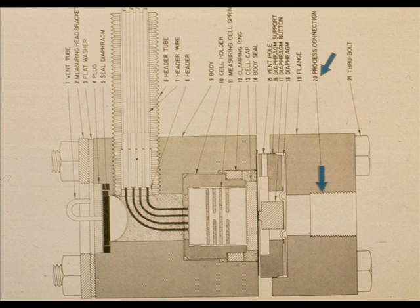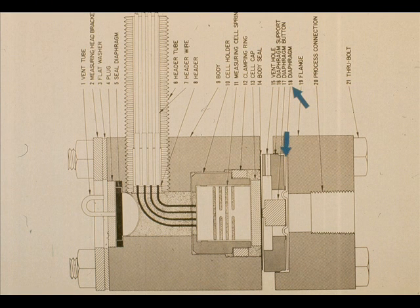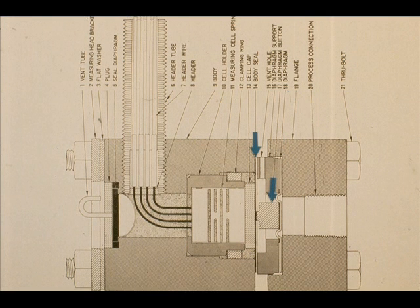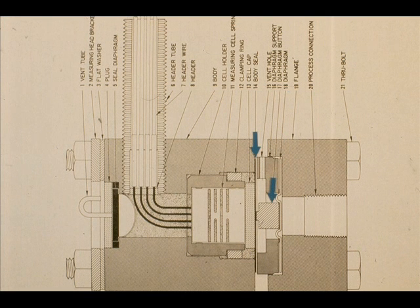In operation, process pressure enters through the process connection 20 and is applied to the measuring diaphragm 18, causing the diaphragm to move. The distance the diaphragm moves is proportional to the applied pressure.